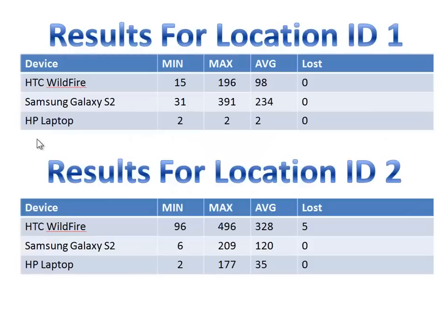Here are the results. From my laptop — also on wireless — I pinged the devices placed in the same location. In the first test, the closest baseline location, the Samsung Galaxy S2 had the highest average. Nobody lost any packets, but you can see a big difference with the laptop.